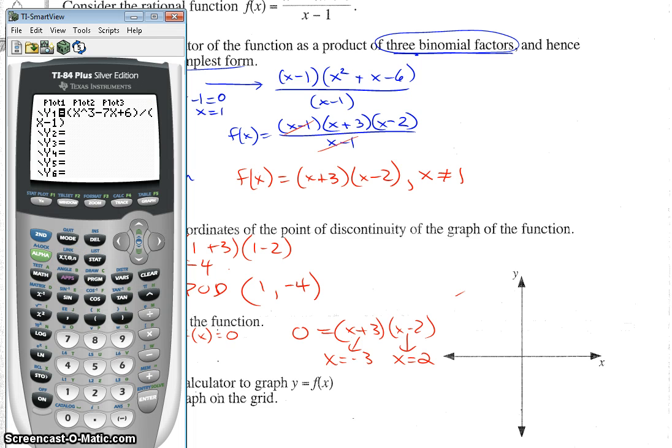Okay, so we put this function, the original function, x cubed minus seven x plus six over x minus one in the calculator. Did you remember brackets around your numerator and denominator? Good. Now, let's go zoom standard six to set it back to normal, and there we go.